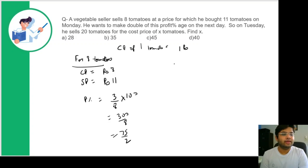Now on Tuesday, he wants to earn double of this profit percentage, so he wants to earn 75 percent profit. On Tuesday, he sells 20 tomatoes for the cost price of X tomatoes, and we need to find X.